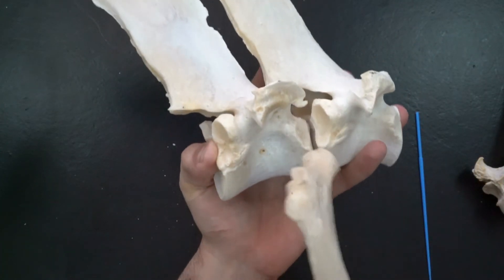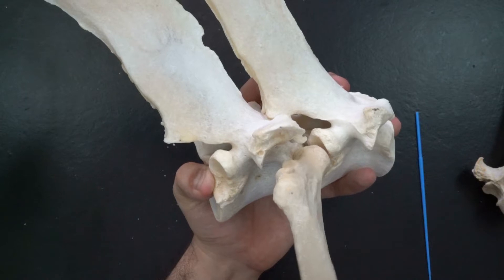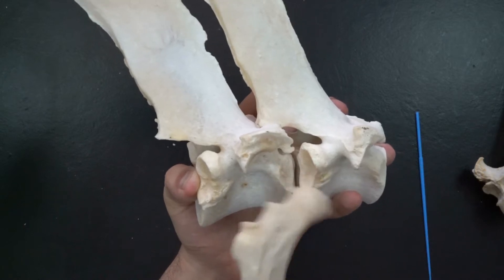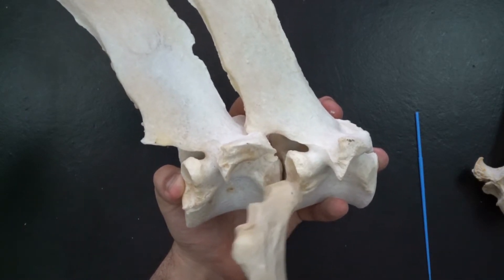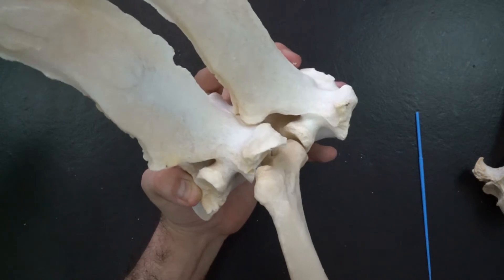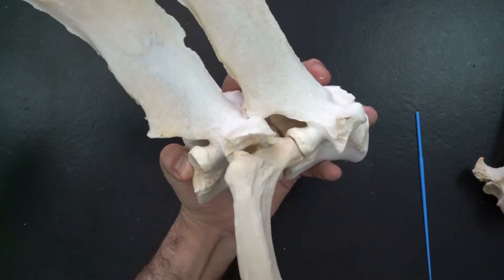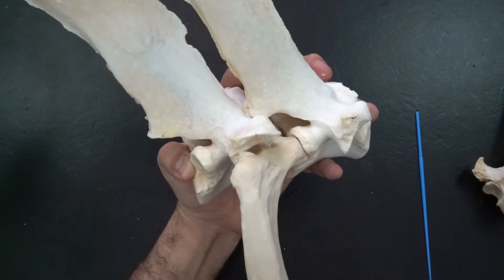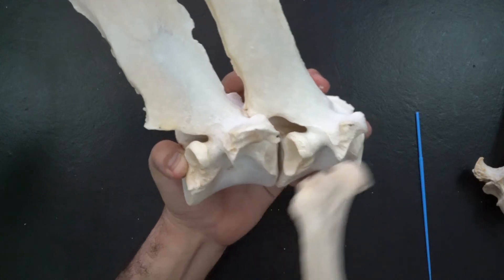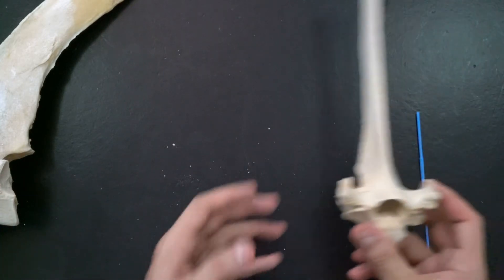The rib articulates with the thoracic spine at two levels: the first between the head of the rib and the two facets on the body, and the second with the transverse process. This arrangement allows minimal movement of the ribs during inspiration and expiration.